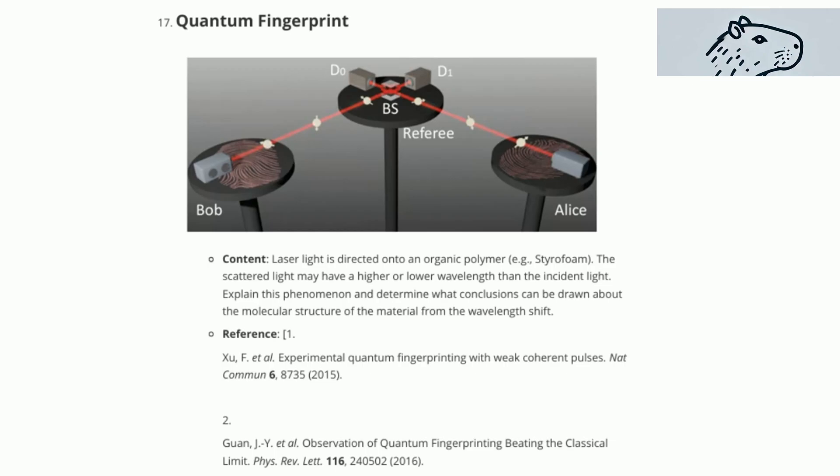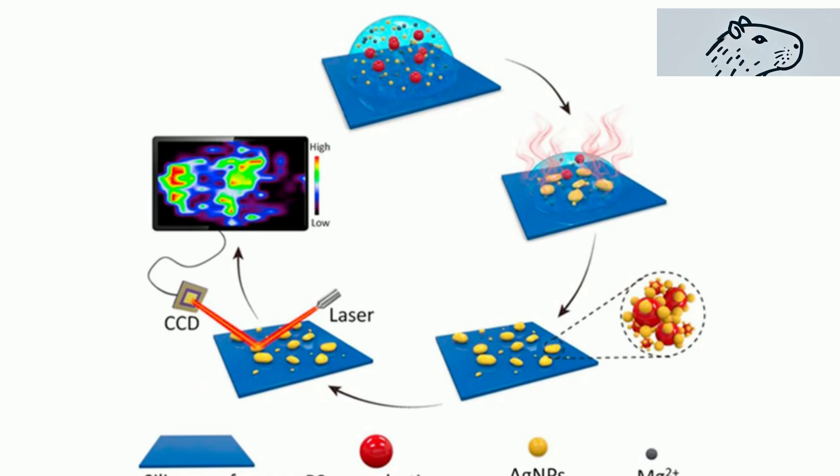Imagine directing a laser beam onto a material like styrofoam and observing how the light that scatters has a different wavelength from the laser.